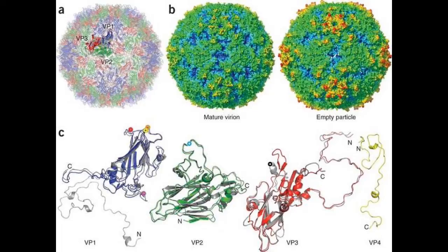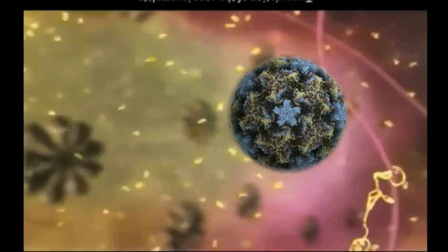Elsewhere, the long viral RNA strand is duplicated. The strands find the empty spheres, enter and coil up tight.